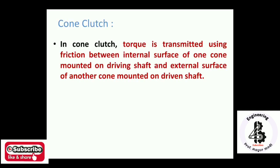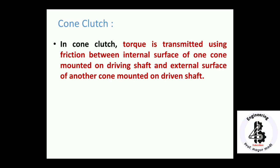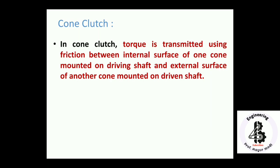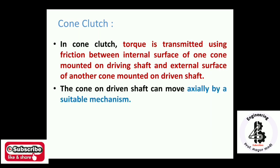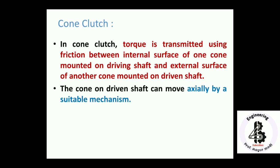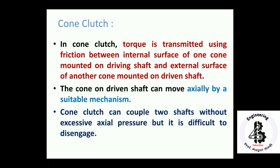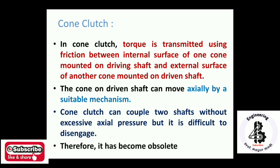In a cone clutch, torque is transmitted using friction between the internal surface of one cone mounted on the driving shaft and the external surface of another cone mounted on the driven shaft. The cone on the driven shaft can move axially using splines. A cone clutch can be coupled to a shaft without excessive axial pressure, but it is difficult to disengage; therefore it has become obsolete.